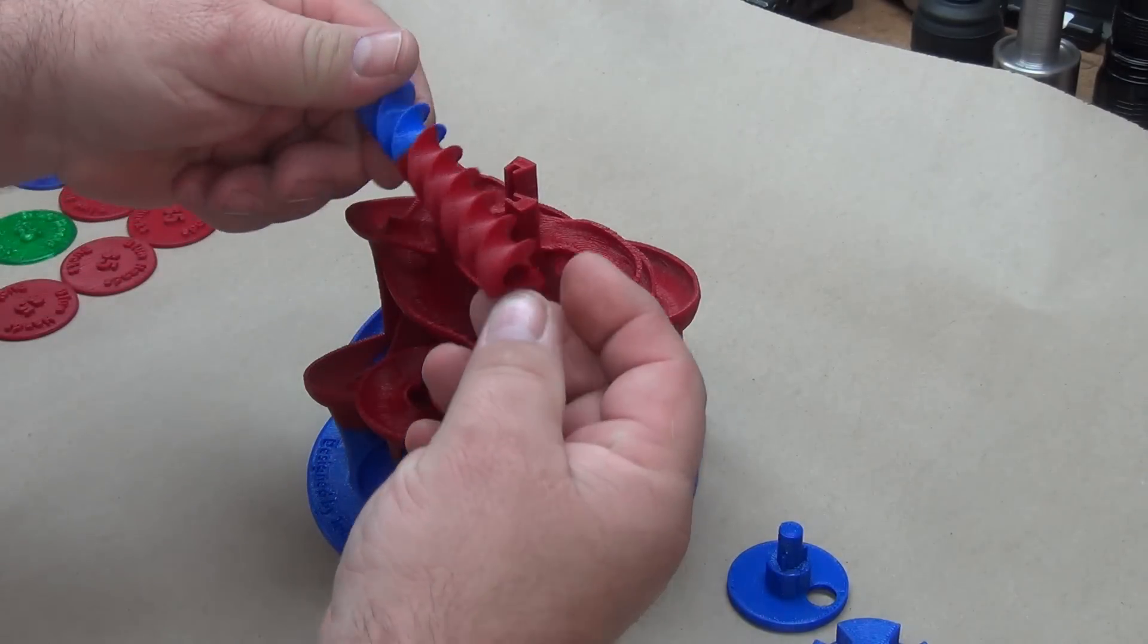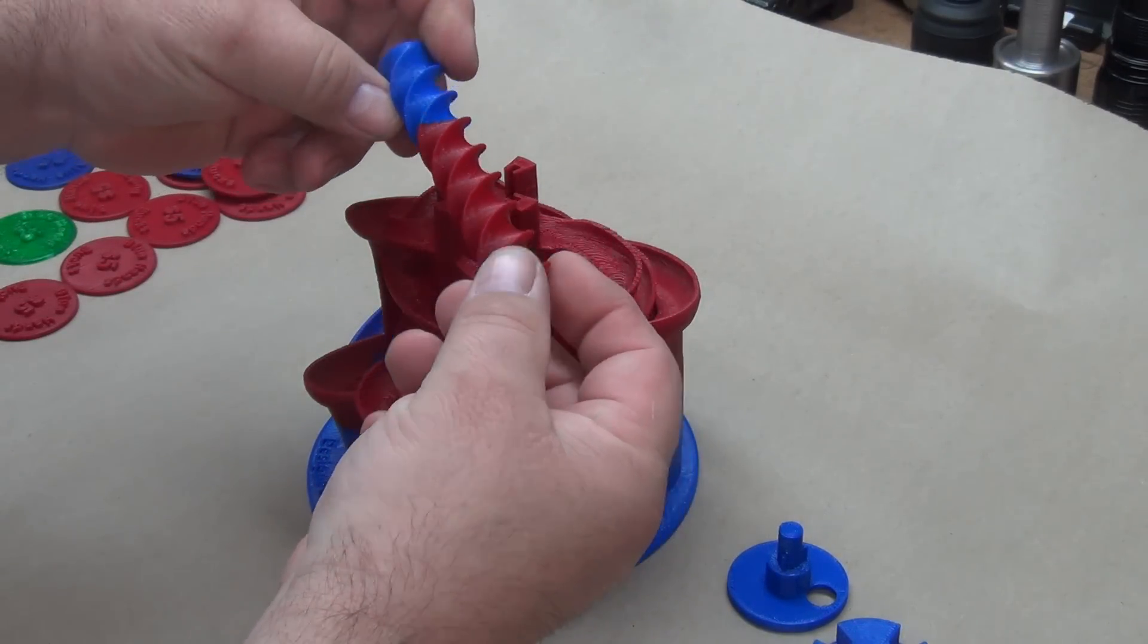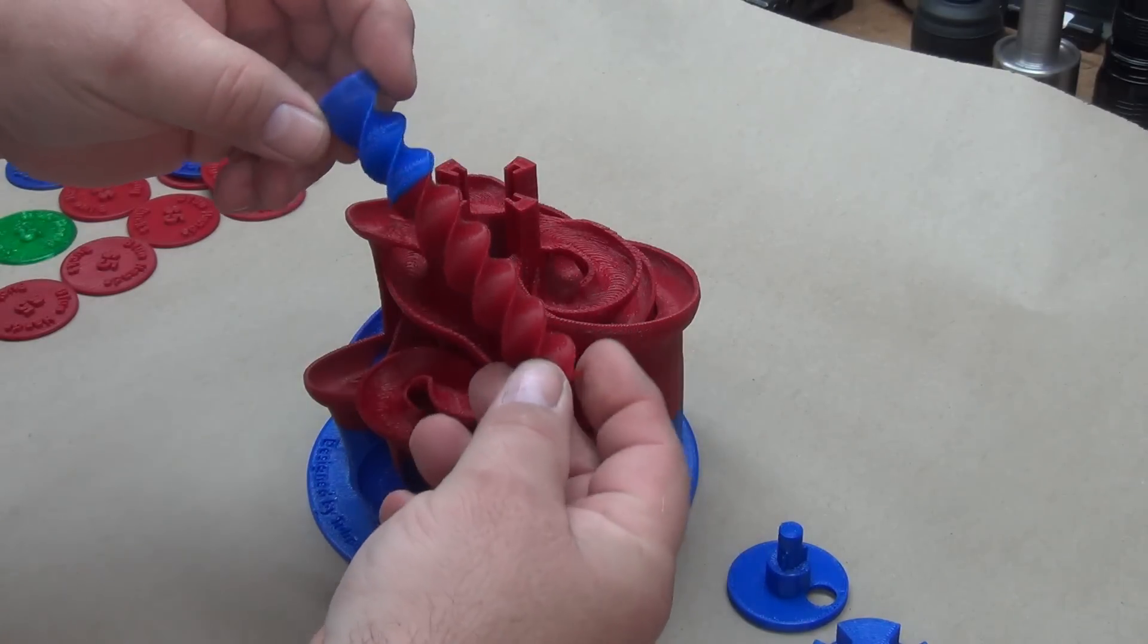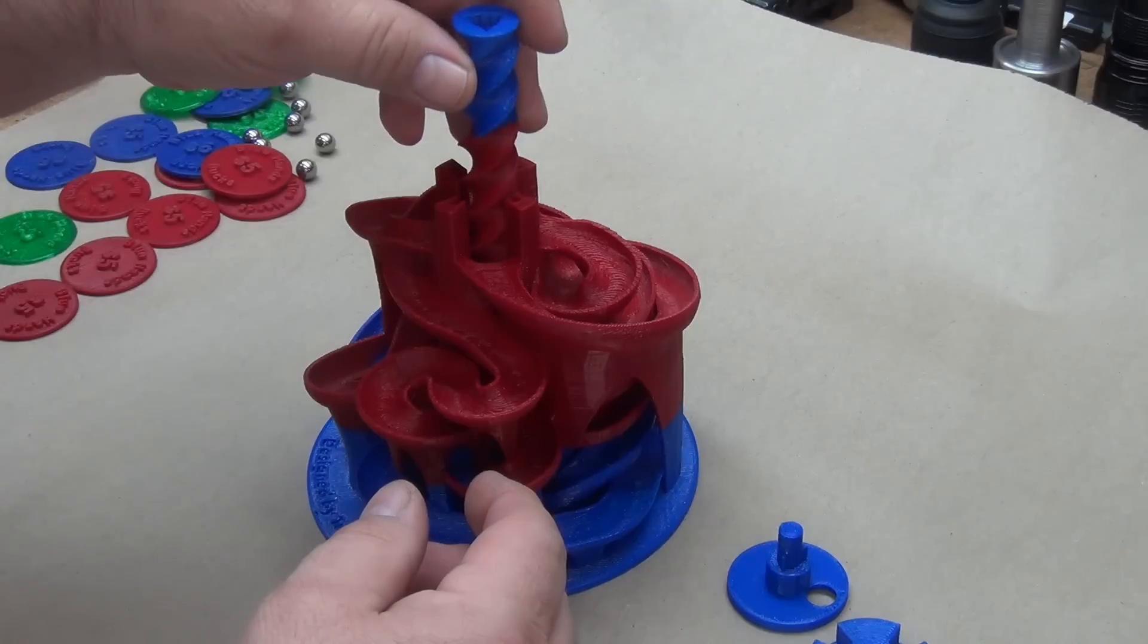So then you can see basically it's just an Archimedes screw. You know, I've been using this to pump well water and all that kind of stuff, put water up different levels, that kind of stuff for a long time.